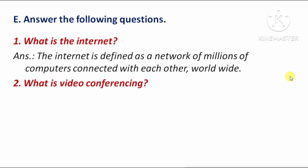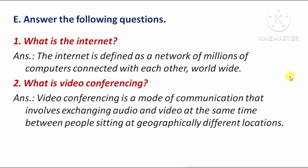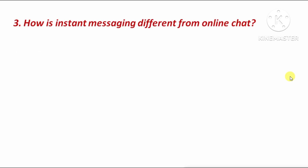Next question: What is video conferencing? — means video conferencing kya hai? Answer: Video conferencing is a mode of communication that involves exchanging audio and video at the same time between people sitting at geographically different locations — means video conferencing communication ka ek mode hai jisme audio aur video ek saath exchange ho sakta hai un logon ke beech jo geographically different locations par baithe hote hain.